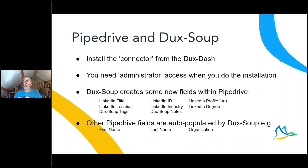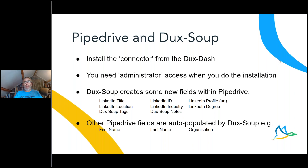So with Pipedrive and DuckSoup, how do you get that connection to work? First, you need to install the connector. From within the DuckStash, you go to the CRM connections and install the connector. When you first do the installation, it's really important that you need administrator access to your Pipedrive environment. That's because DuckSoup creates some new fields within Pipedrive, which it populates as it does the data exchange. Fields created include the LinkedIn title, LinkedIn ID, profile URL, location, industry, degree of connection (first, second, or third), plus DuckSoup tags and notes. Other Pipedrive fields populated include name and organization of the prospect.